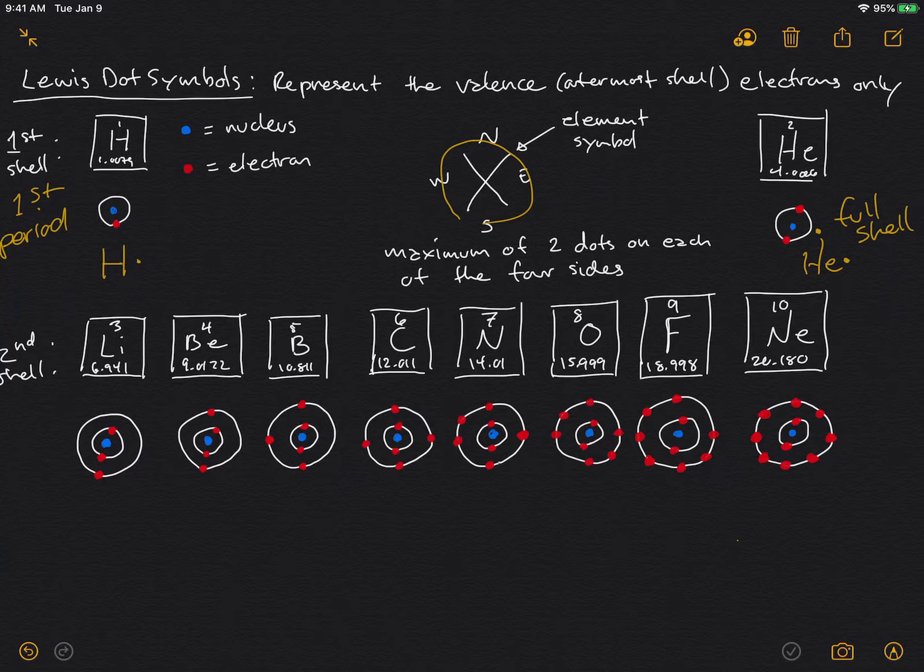Then we go down to the second shell, which is the second period on the periodic table. You see lithium, it's got the two electrons that helium had in the first shell, but now you start a new shell. So the second shell has one valence electron, just the one electron in the second shell. Lithium's Lewis dot symbol looks like this.